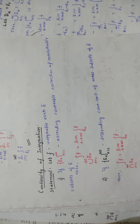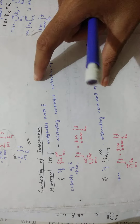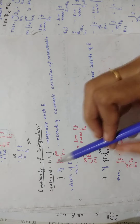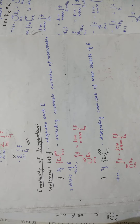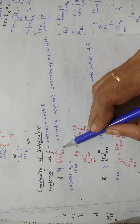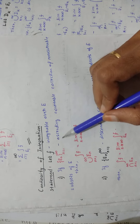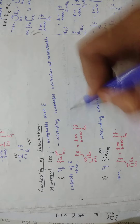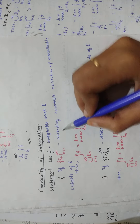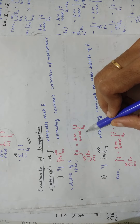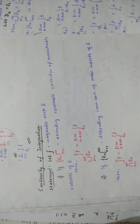I wrote the statement in the form of hints — main things only. First, you are taking a function f that is integrable over E. Let f be integrable over E. You are having two parts in this theorem. The first part: if En, n equal to 1 to infinity, is a countable collection of measurable subsets of E, then a certain condition will hold. E here means a measurable set.